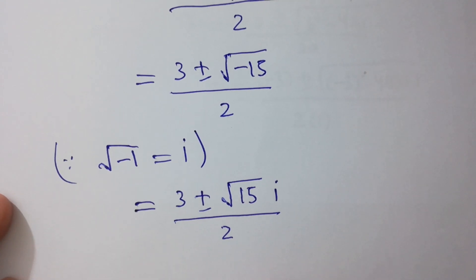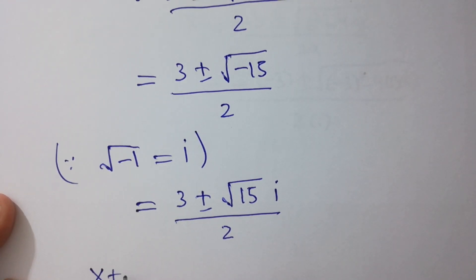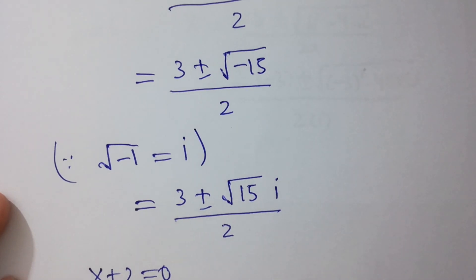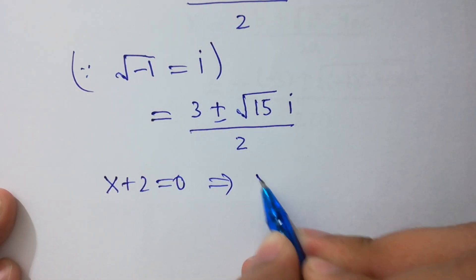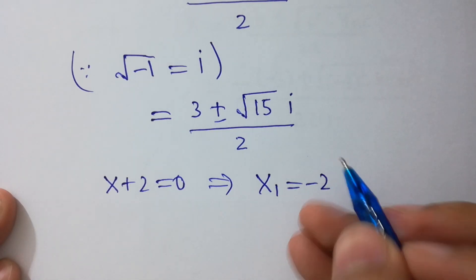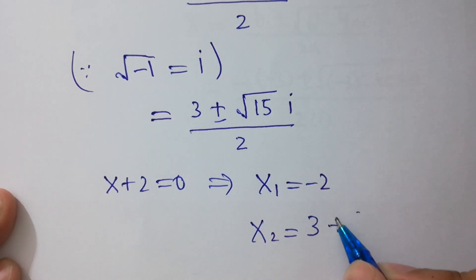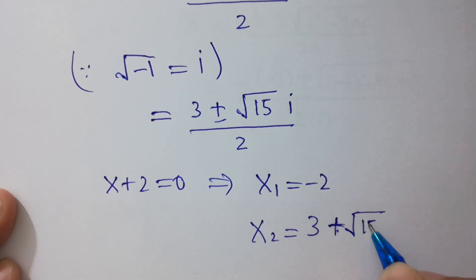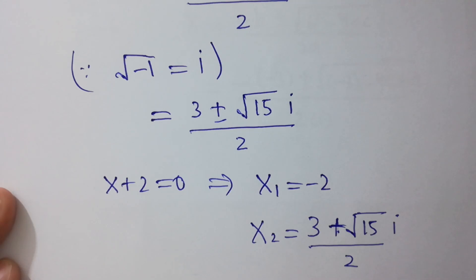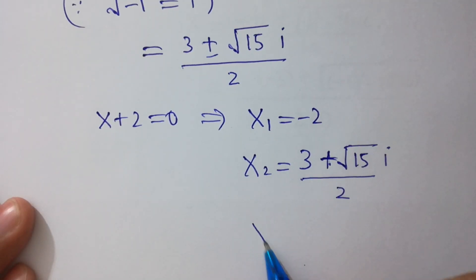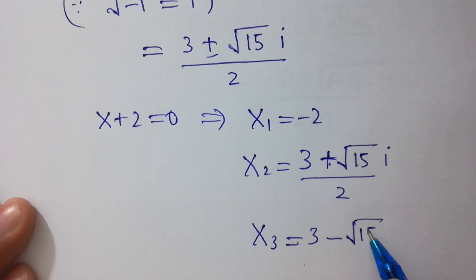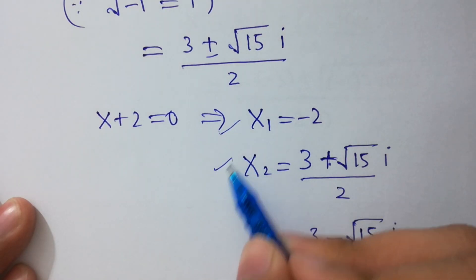So we have 3 solutions. Solution 1: x plus 2 equals 0, so x₁ equals minus 2. Solution 2: x₂ equals (3 plus square root of 15i) divided by 2. And x₃ equals (3 minus square root of 15i) divided by 2. So we have 3 solutions here.